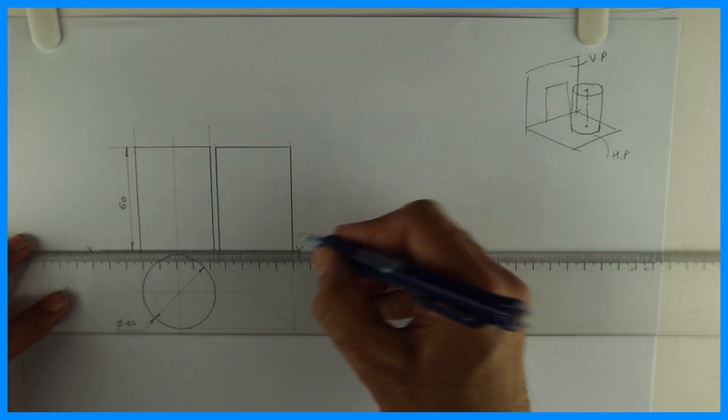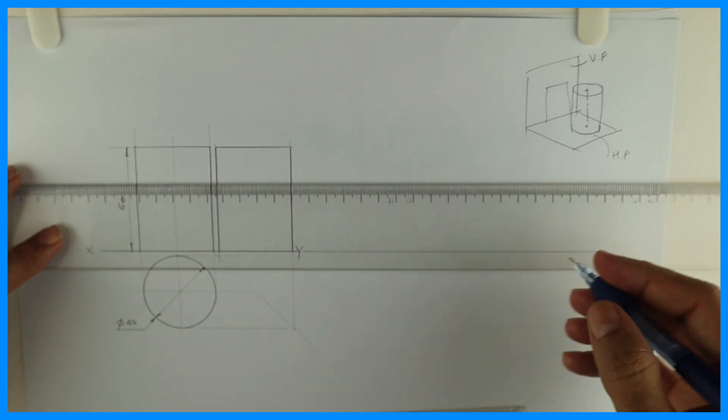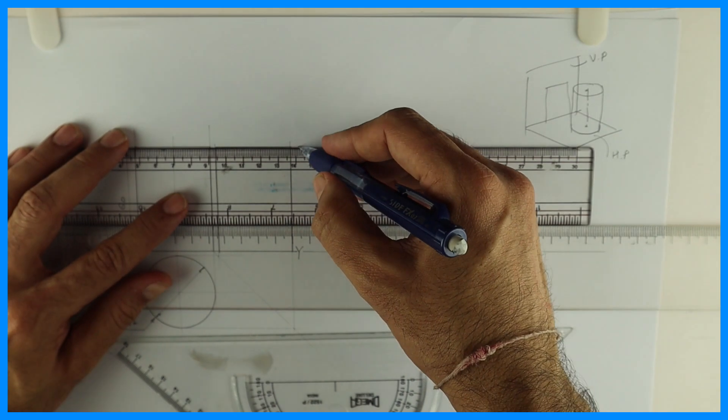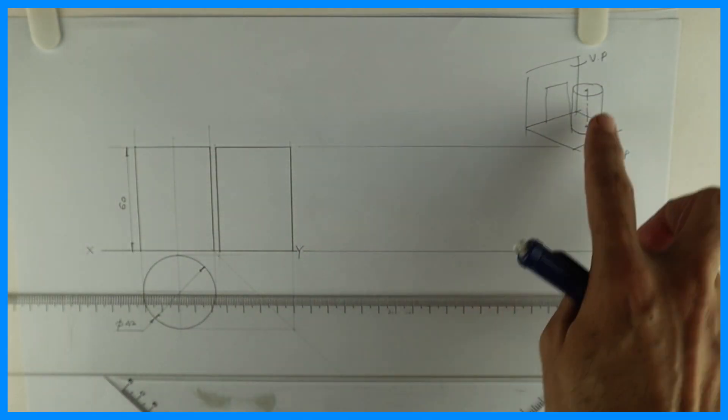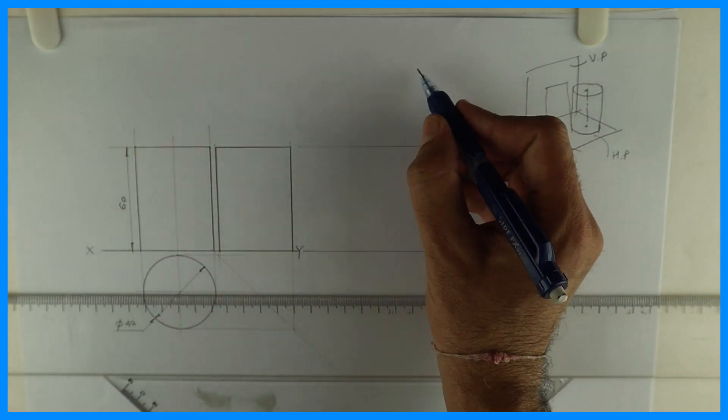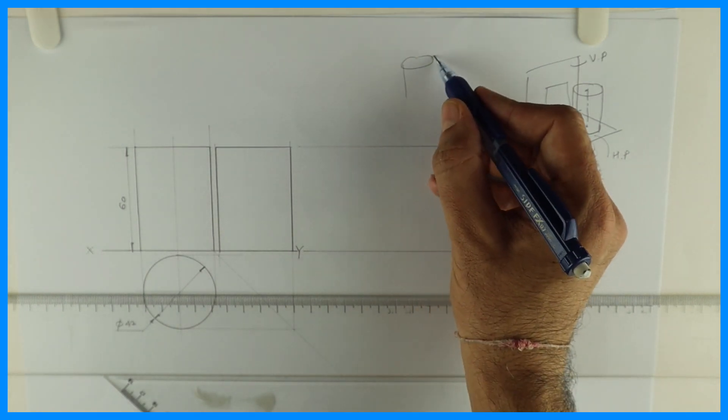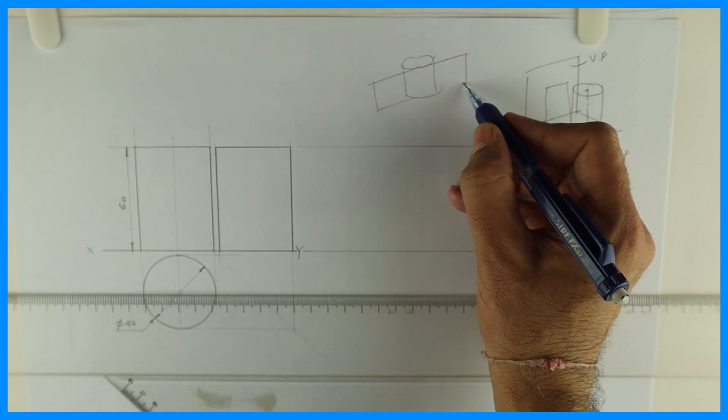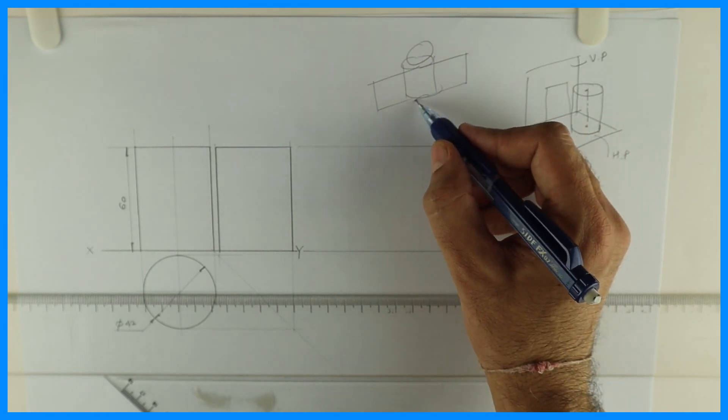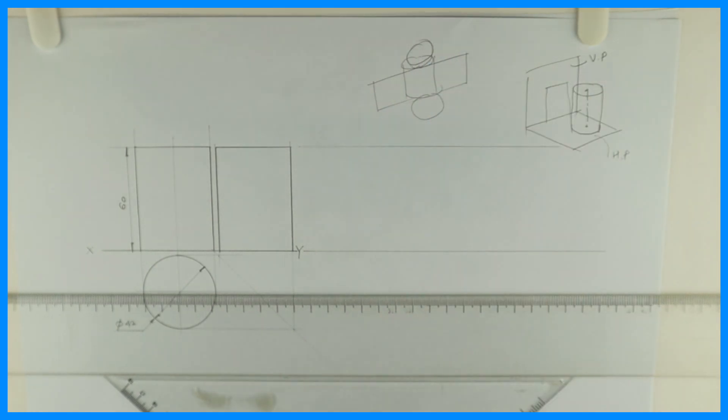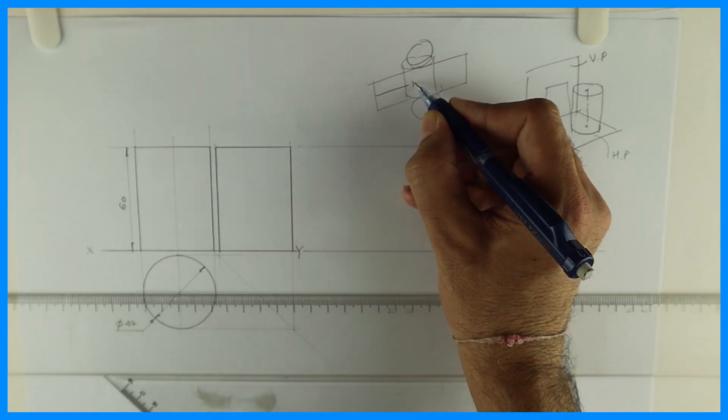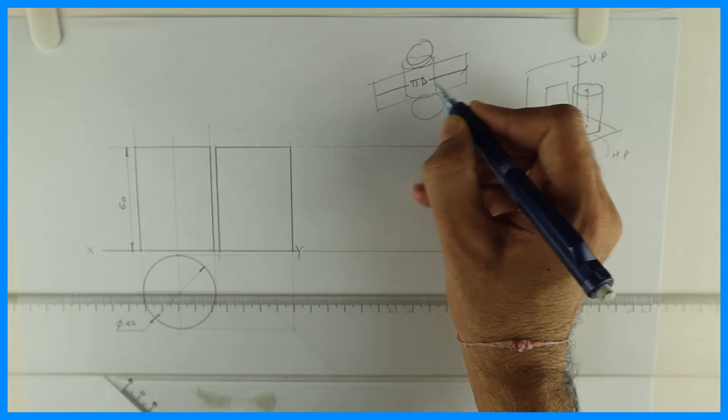After that, for development I will draw one line. Now see, this development will be how much long? First, what do you mean by development? When you open it, how it will appear? When you open this cylinder, see, it will be a rectangular sheet, right, with two circles - one at the top, one at the bottom. This is total development.